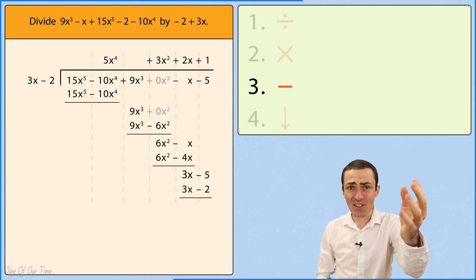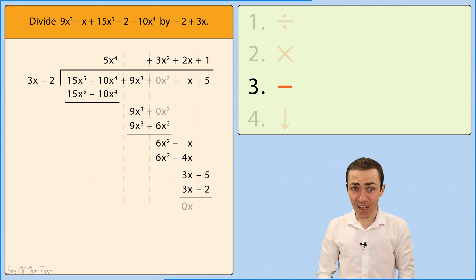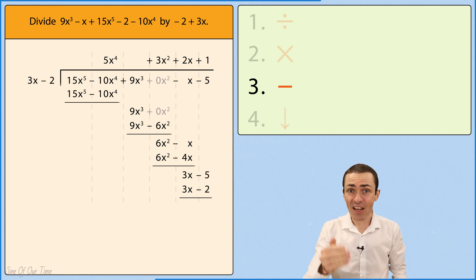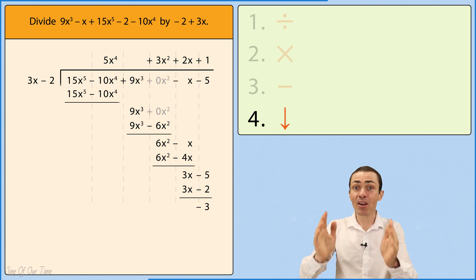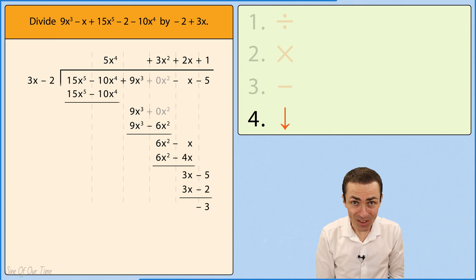And then 3x subtract 3x gives us 0x as expected. And negative 5 subtract negative 2 gives us negative 3. There's nothing more to bring down. So finally, we have reached the end of our calculations.